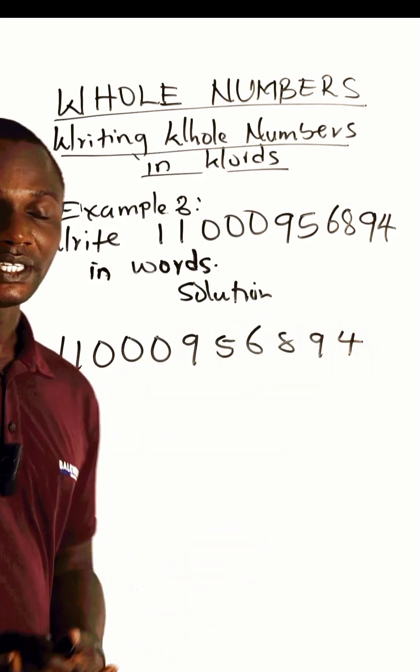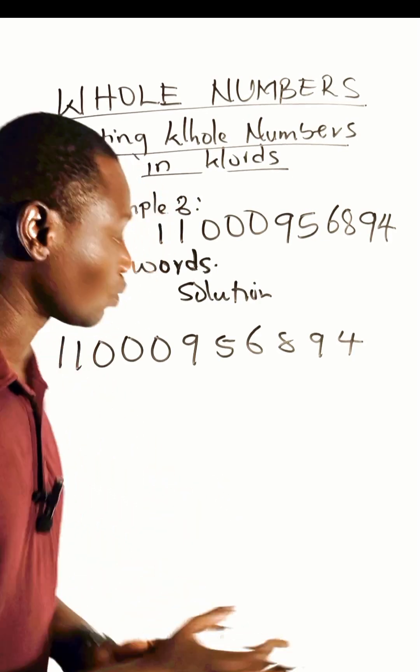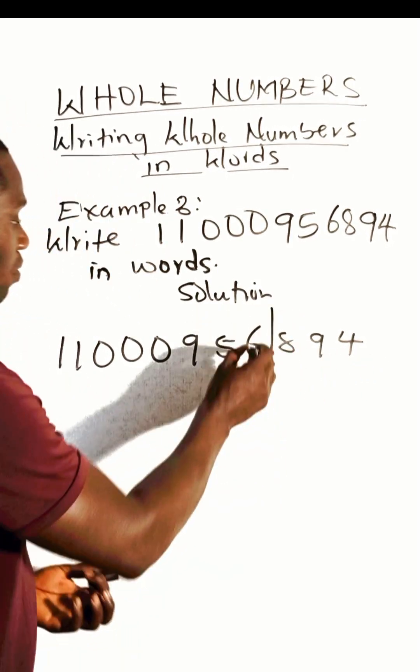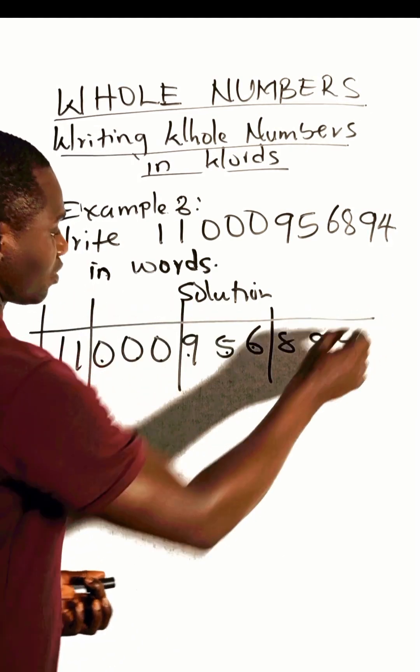The next step is to group these digits into different place value groups starting from this end. Three form a group: one, two, three. Another group: one, two, three. Another group: one, two, three. Then these two will form a group.